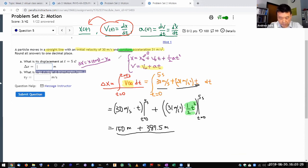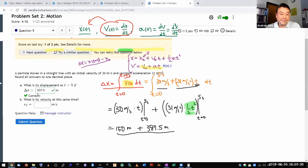So adding the two, I get 537.5. Hopefully it's correct. Let's see. Oh, good.